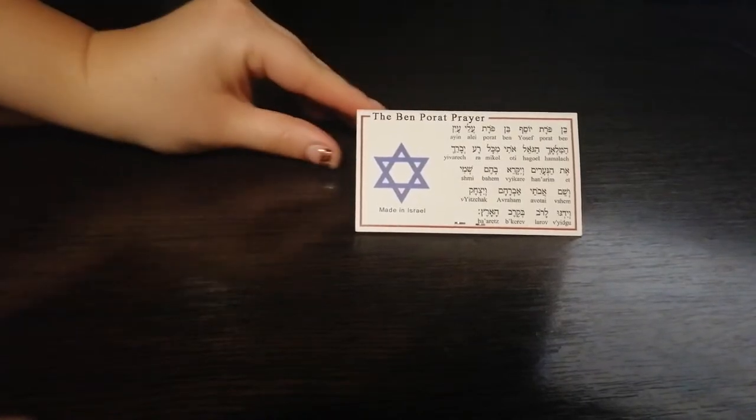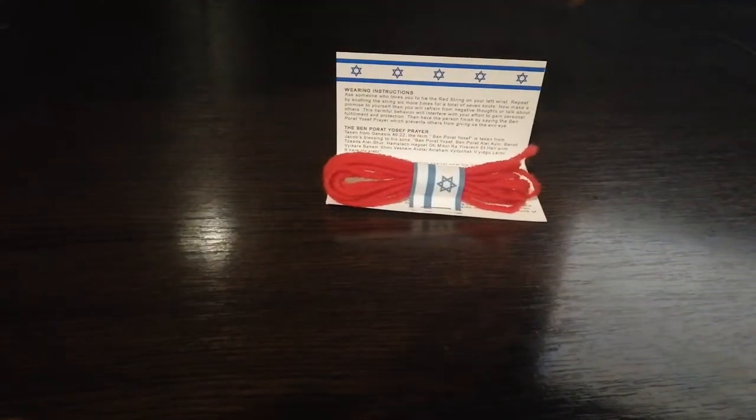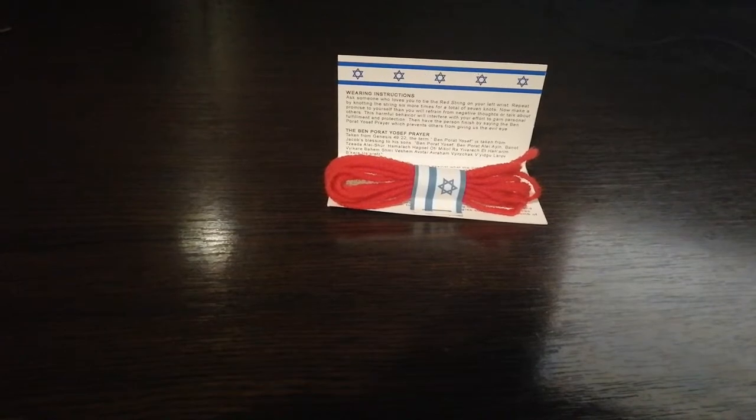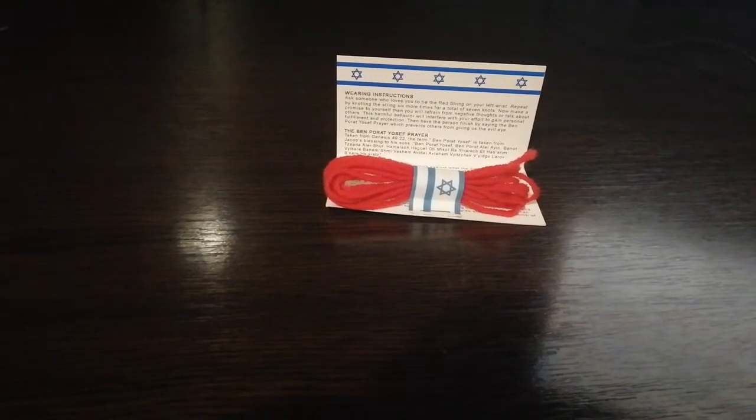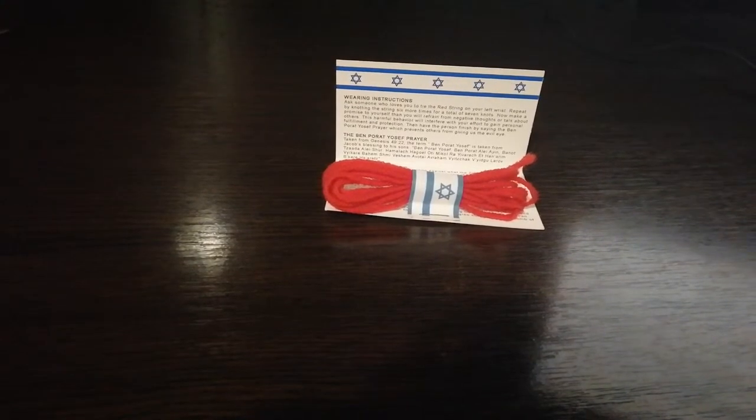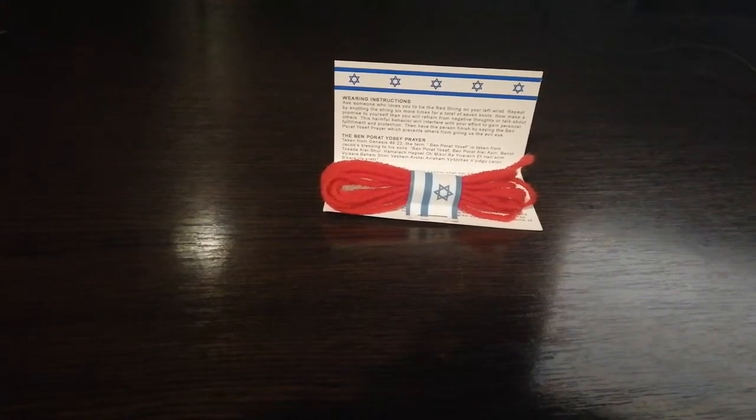When we look at others with hate or with envy, we are sending negative energy their way. The same applies when others look at us. The red string protects us from these conscious and unconscious stares.